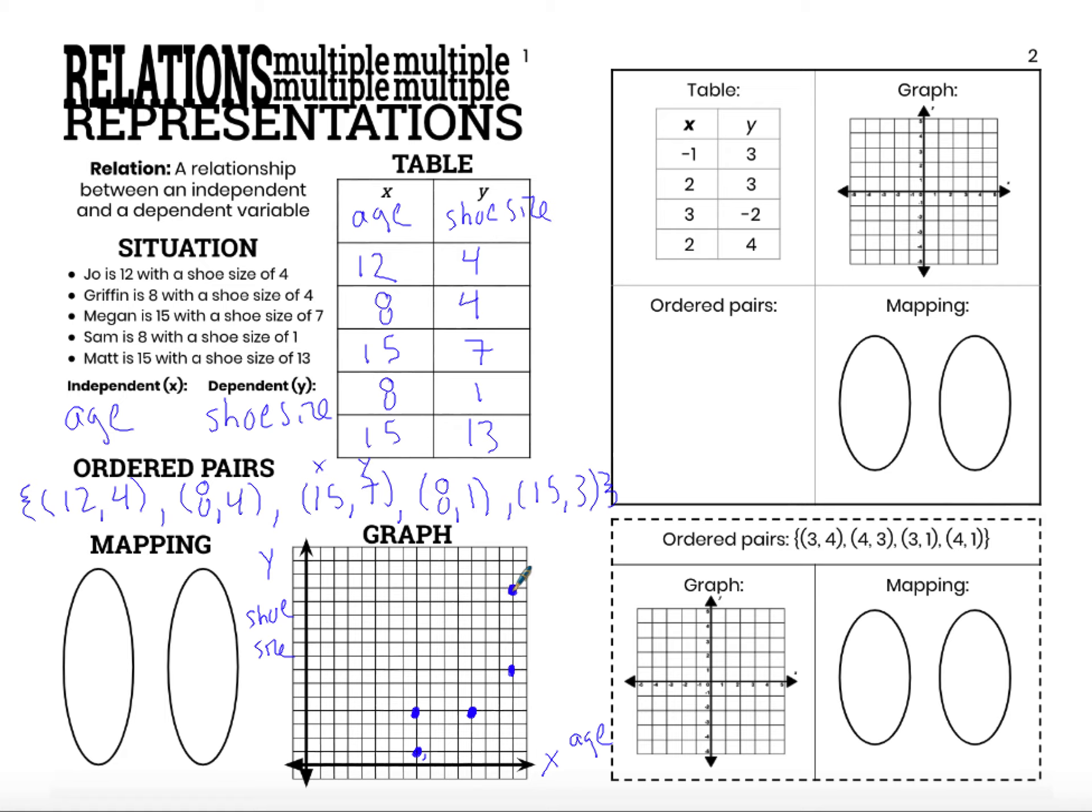So this graph, in its entirety, represents my relation within this situation of ages and shoe sizes and how they go together. This relation is generally a positive situation, a positive correlation situation. As our ages get older, our shoe sizes get bigger. But the relation here is just these five pairings of independent and dependent variables.